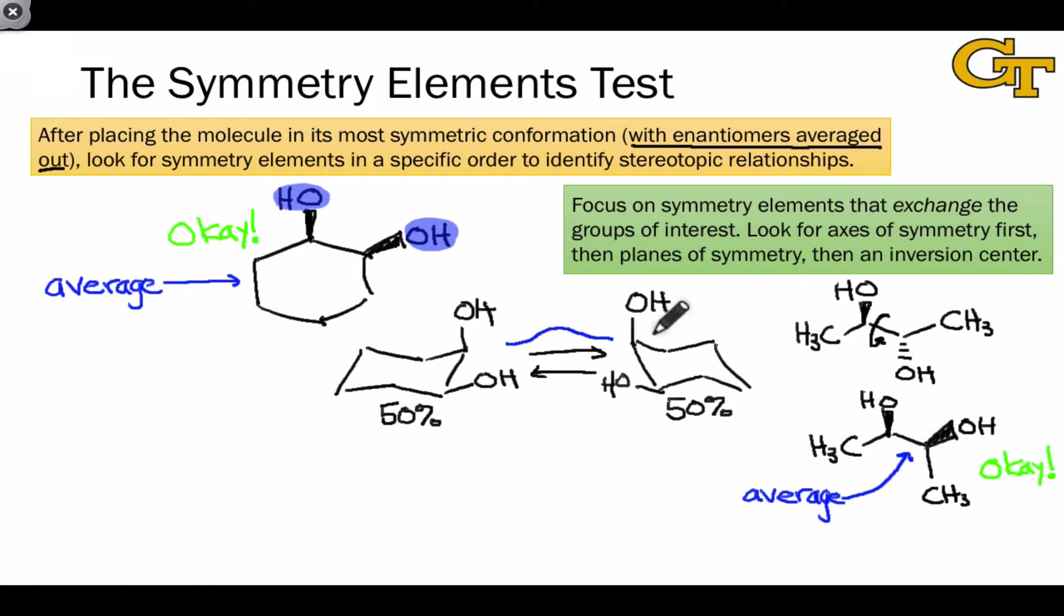In this case, and in many others, it's going to make our lives easier to put the molecule in its most symmetric conformation with enantiomers averaged out. This makes it very easy to see the plane of symmetry possessed by the molecule. Of course, in this particular case, the most stable staggered conformer possesses inversion symmetry. And so it doesn't matter whether we use the most symmetric conformer or the most stable conformer to determine the relationship between the hydroxyls. In both cases, we would come to the conclusion that they're enantiotopic.